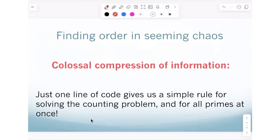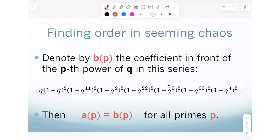What happens is a kind of colossal compression of information, because just think about just one line of code. There's some regularity here. You don't need an infinite amount of information — just a finite amount of information.